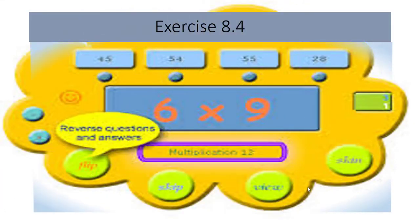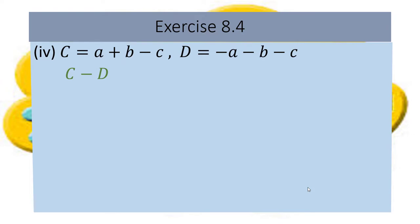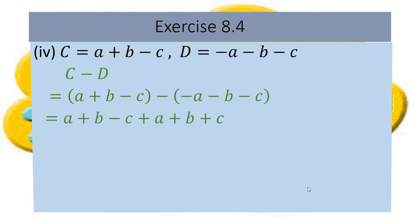Now we will discuss Part Number 4. C equals a plus b minus c, D equals minus a minus b minus c, and we have to find C minus D. We subtract D's expression from C's expression, so D's terms will have their signs changed. All three had negative signs, so now all three signs become positive. Next, we arrange the like terms together.